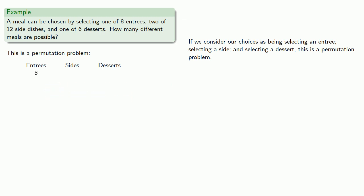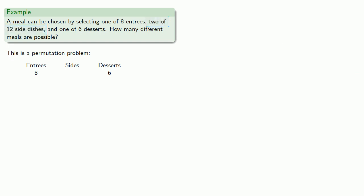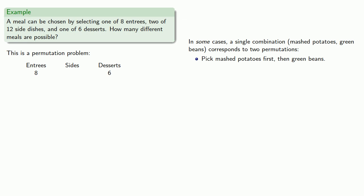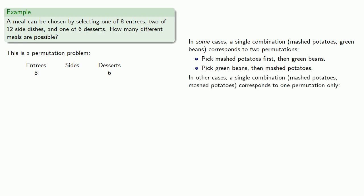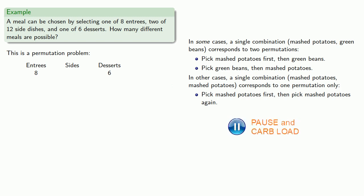There are eight entrees and six desserts, but we need to know how many ways we can select two sides. In some cases, a single combination — say mashed potatoes and green beans — corresponds to two permutations: we can pick mashed potatoes first then green beans, or green beans then mashed potatoes. But some of us like to double up on our sides, so in other cases a single combination — mashed potatoes and mashed potatoes — corresponds to only one permutation.